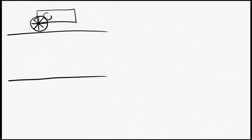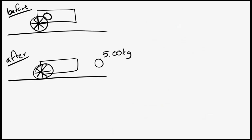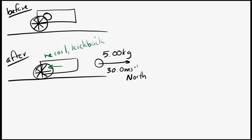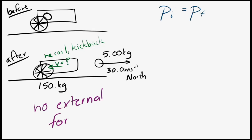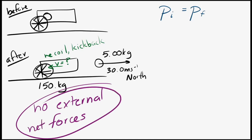The last example is a cannon firing a cannonball. The cannon and cannonball start at rest. After firing, the cannonball — with a mass of five kilograms — moves at 30 meters per second to the north. When a cannon or gun is fired, there's always a recoil: the cannon moves in the opposite direction from the cannonball. We want to find how fast the cannon recoils. We can use momentum conservation because no external net force acts on the cannon-cannonball system.